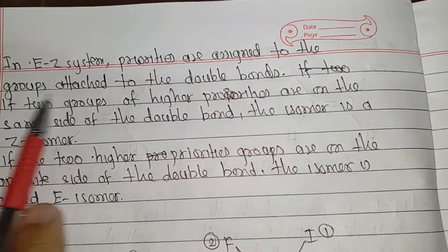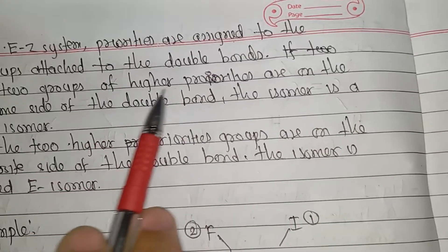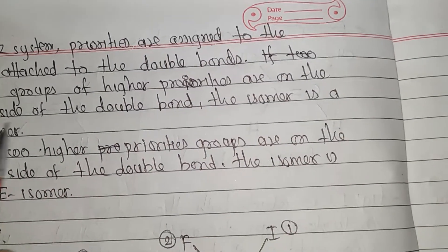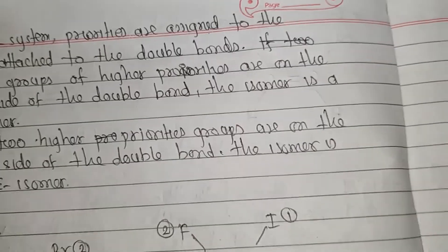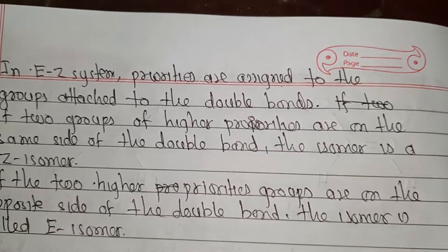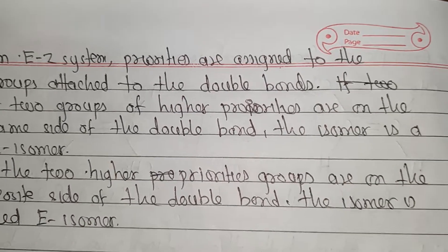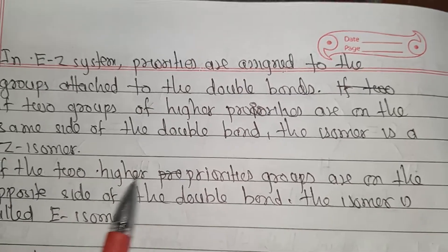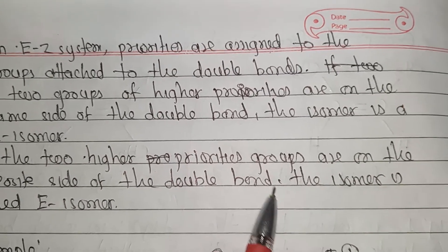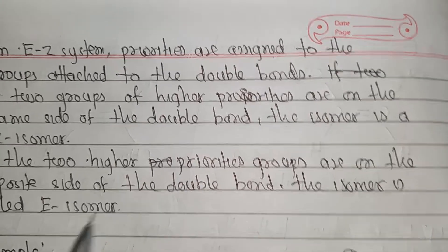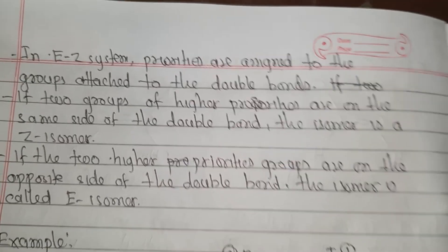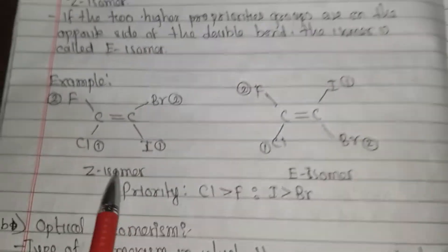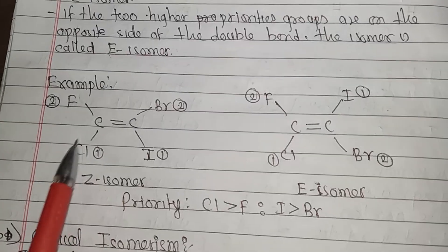In the E/Z system, priorities are assigned to the groups attached to the double bond. If the two groups of higher priority are on the same side of the double bond, it is the Z isomer.